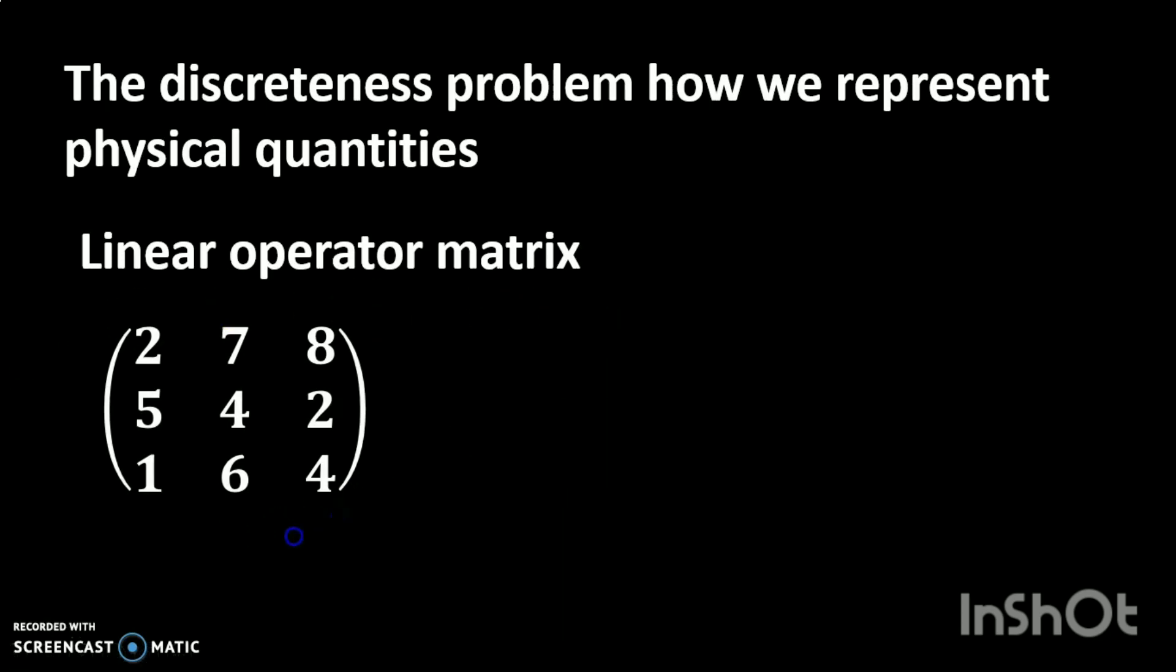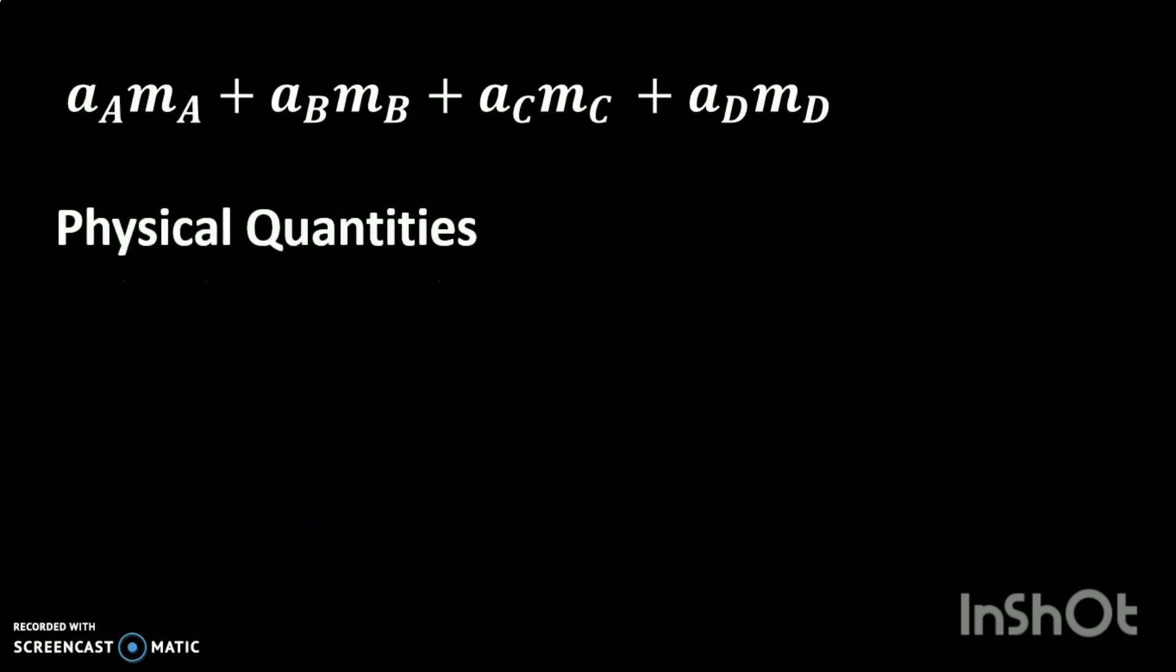So putting it all together, we now have a really solid case for how we want to model quantum mechanics. A solid case for a quantum math model. Particles are represented by linear combinations of vectors in some vector space. Physical quantities are represented by linear operators within that space.